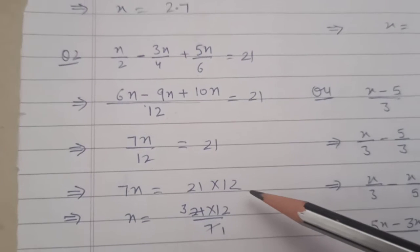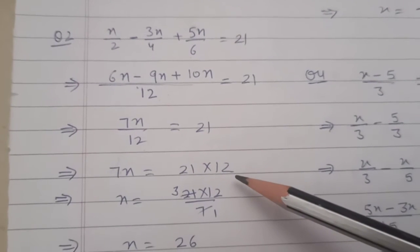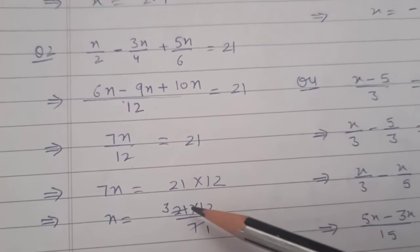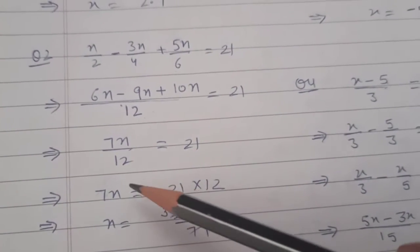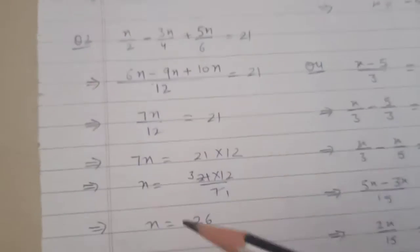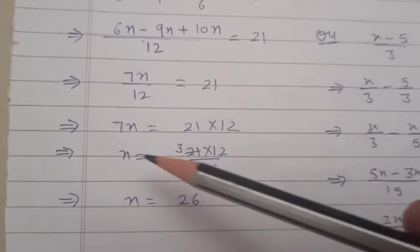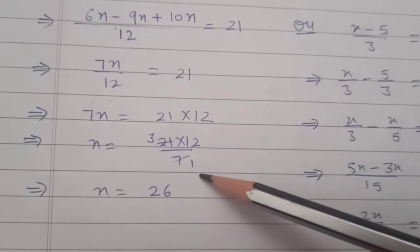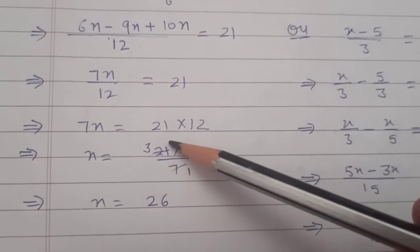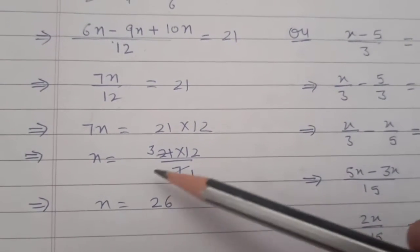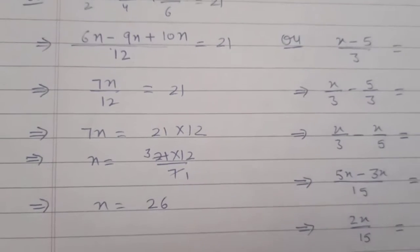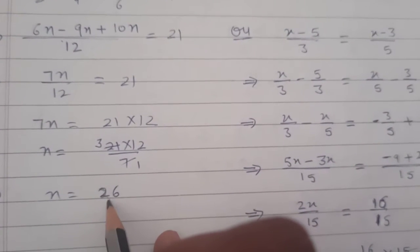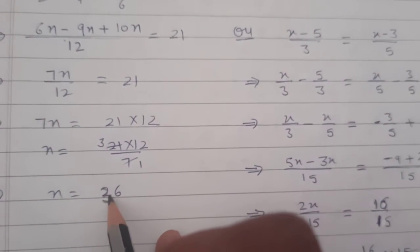Now 12 is dividing on this side, so it will multiply on the other side. Then 7 is multiplying here, so it will divide there — they cancel from the same table. So n is equal to 12 times 3, which is 36. The answer is 36.